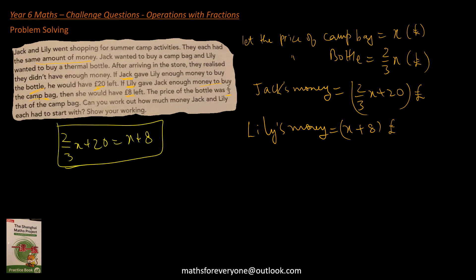So we collect all the x's to one side. So it would be 20 minus eight equals x minus two-third x, 12 equals one-third x, x by 3, or x equals 36.